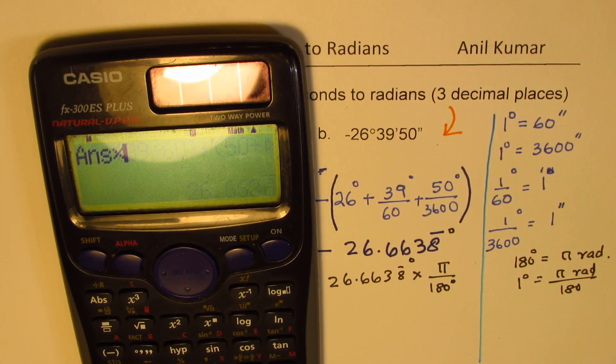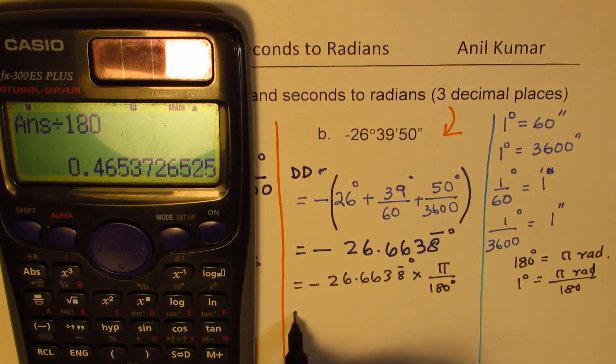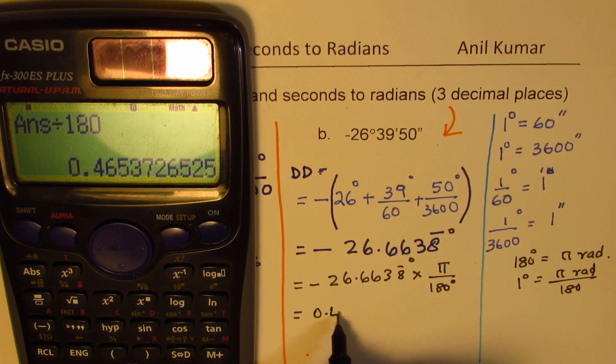So we multiply this number by pi and then divide it by 180. So what you get here is in radians, which is 0.4653. Rounding to three decimal places, we get 0.465 radians.